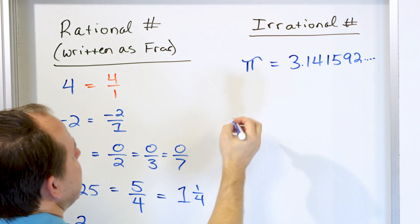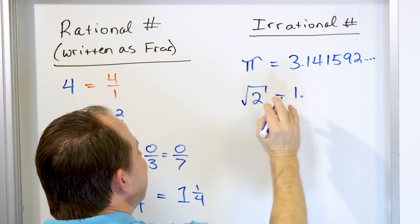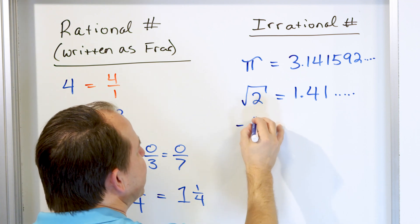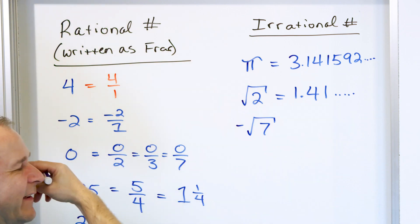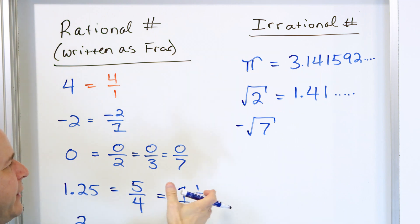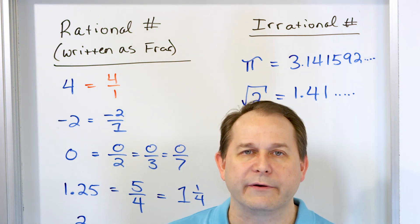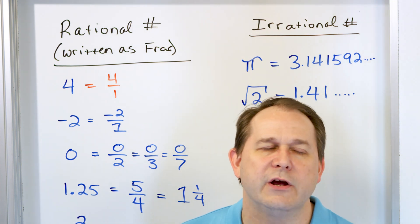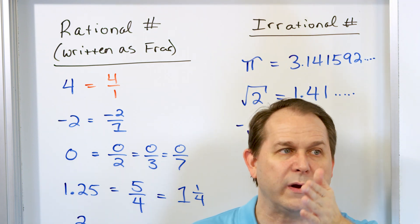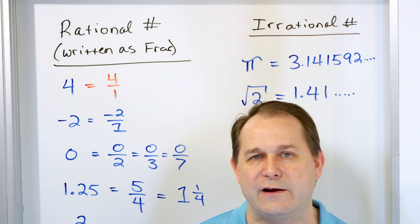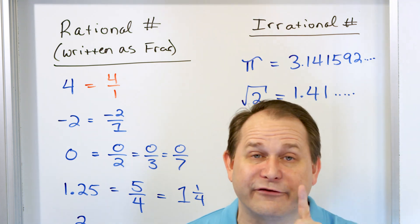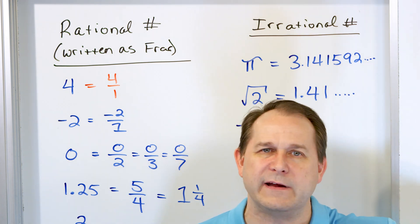What are some other irrational numbers? The square root of two is also irrational. If you put that in a calculator, you get 1.41 and then a bunch of digits with no pattern. Also, negative square root of seven — if you put that in a calculator, you'll find a decimal that goes on and on forever with no pattern. So basically, square roots that give you whole numbers are rational, but all other radicals that don't give whole number answers are going to be irrational. Square root of three, square root of five, square root of six — we know square root of four is two and square root of nine is three, but square root of ten is irrational; it goes on and on forever in the calculator.